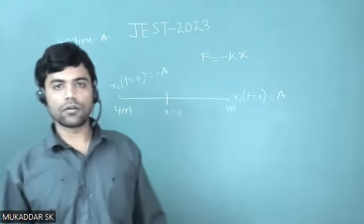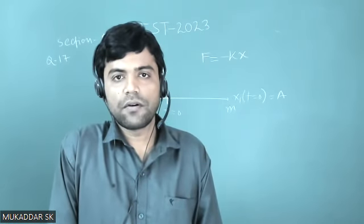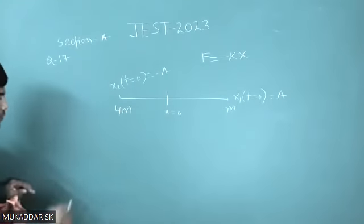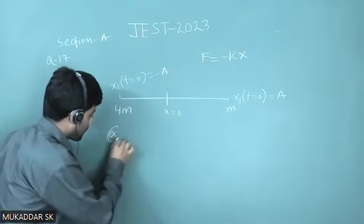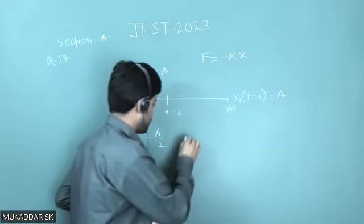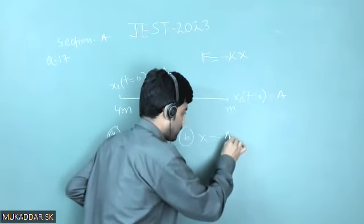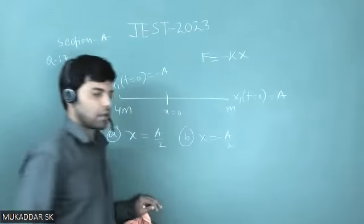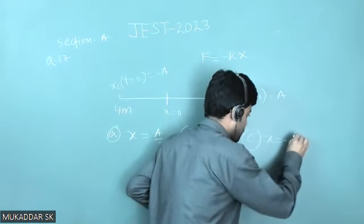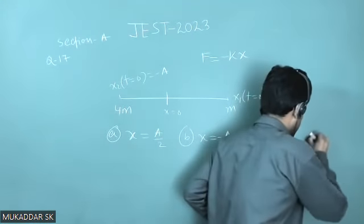The question is: at what point on the x-axis will they first collide? The four options given are: x = a/2, x = -a/2, x = -a/4, and x = 0.